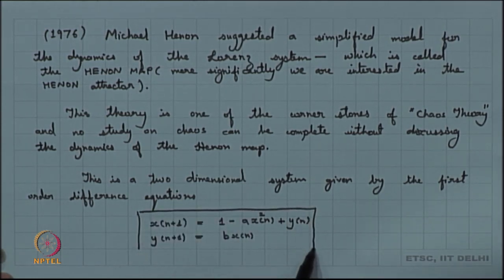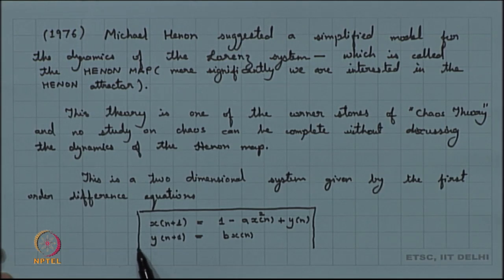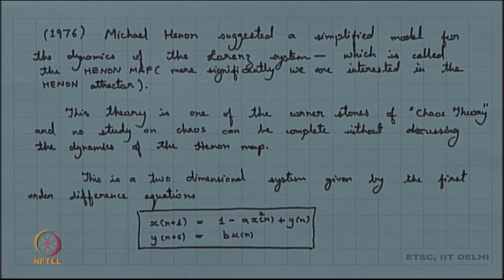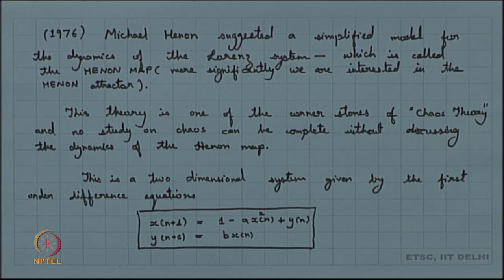As Hennon suggested, these equations very well model the Lorenz system. The Lorenz system is basically studied in terms of differential equations, but here we are looking at it in terms of maps — these are the difference equations.